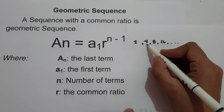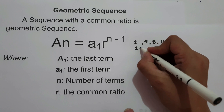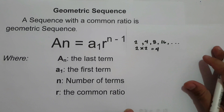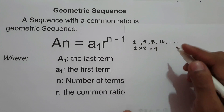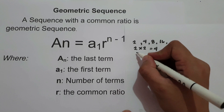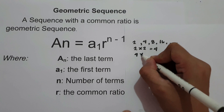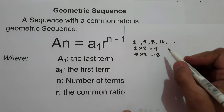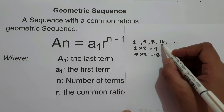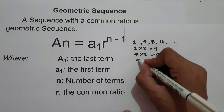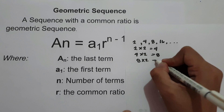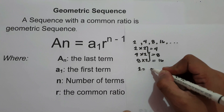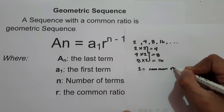The second term, 4, is obtained by multiplying 2 to the first term — that is 2 times 2 is 4. The third term, 8, is obtained by multiplying 2 to the second term — that is 4 times 2 is 8. And the fourth term, 16, is obtained by multiplying 2 to the third term — that is 8 times 2 is 16. So 2 is what we call the common ratio.